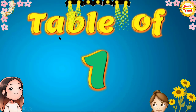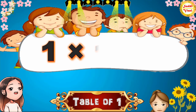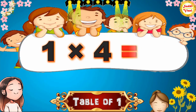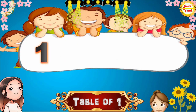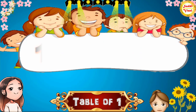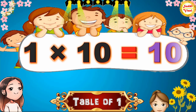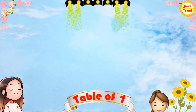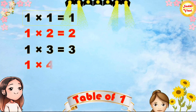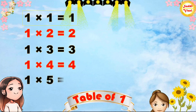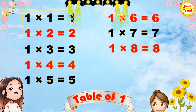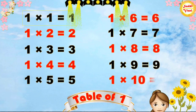Hello children, we will learn table of 1. Once again: 1×1=1, 1×2=2, 1×3=3, 1×4=4, 1×5=5, 1×6=6, 1×7=7, 1×8=8, 1×9=9, 1×10=10.